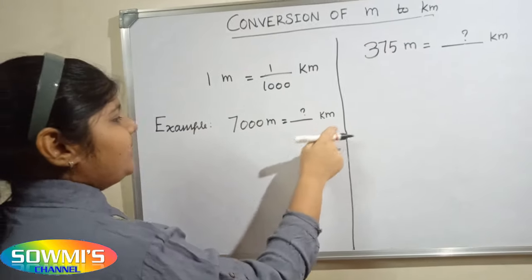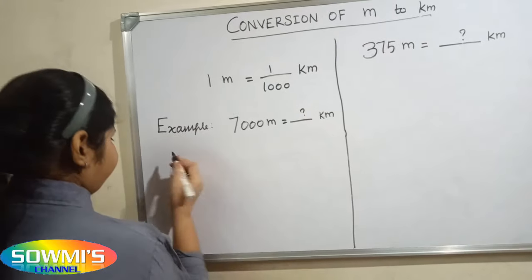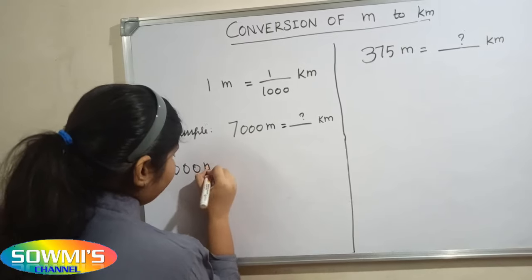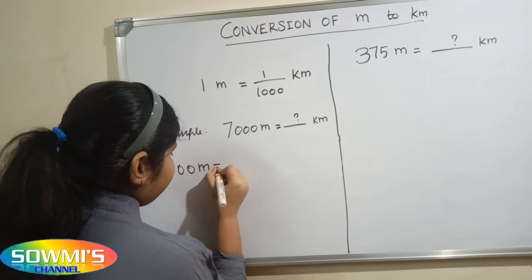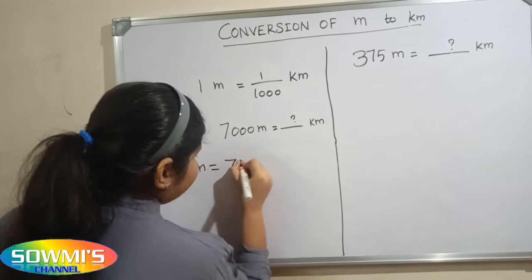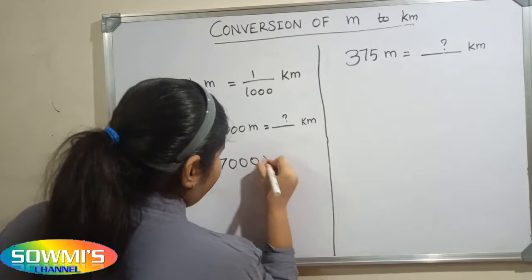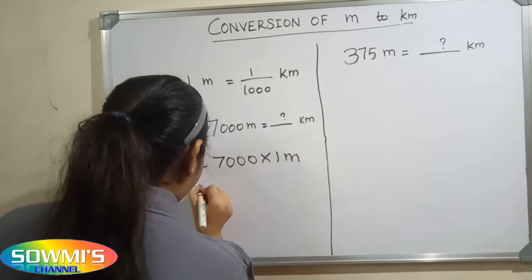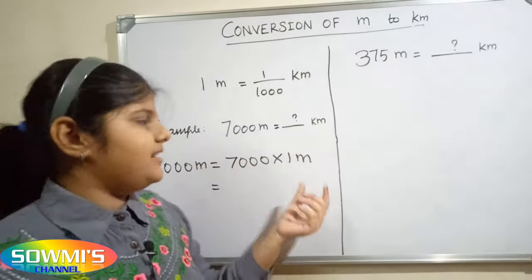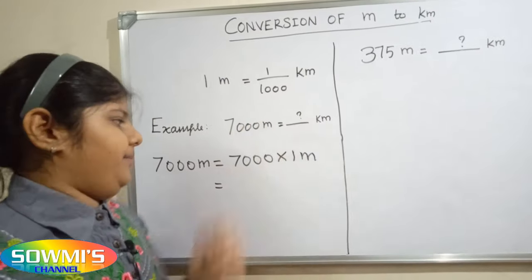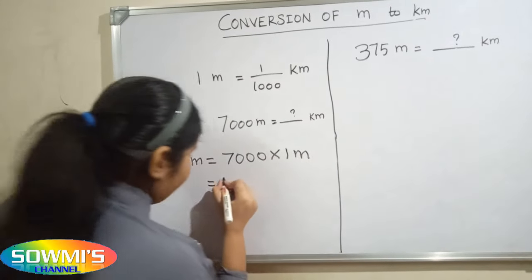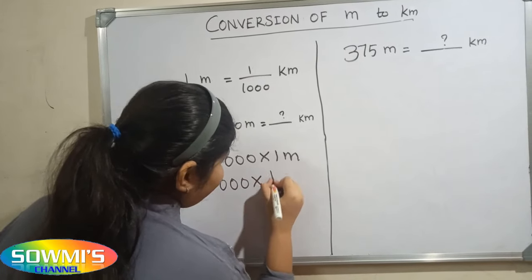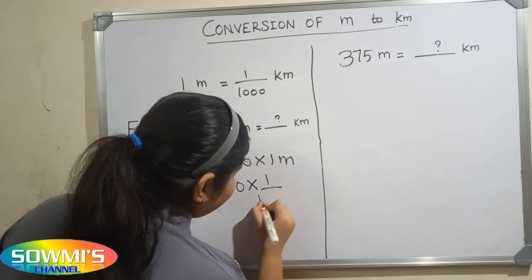For example, seven thousand meters into kilometers. Seven thousand meters is equal to seven thousand multiplied by one meter. Here, one meter is equal to one divided by one thousand kilometers, so seven thousand multiplied by one divided by one thousand kilometers.